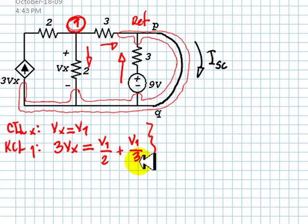Those are the two equations with two unknowns, V1 and Vx, we need to solve. And the solution is that V1 is 0 volts.